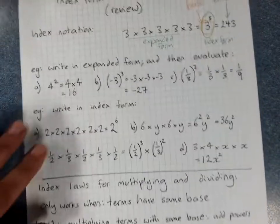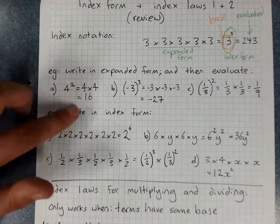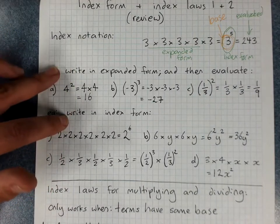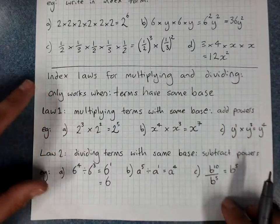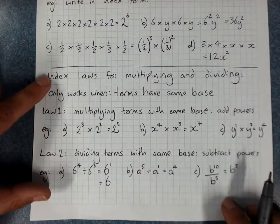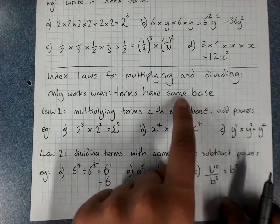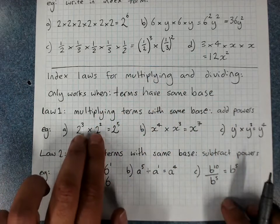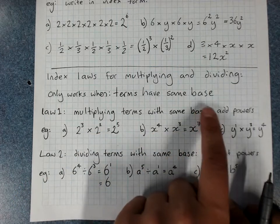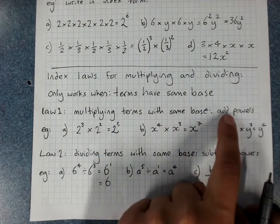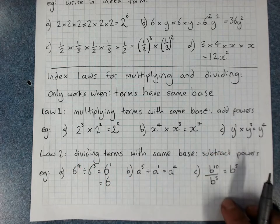To summarise: index notation, how to convert between expanded form and index form, and what the base number is. The index laws for multiplying and dividing work when terms share the same base. Shortcut when multiplying — add the powers. Shortcut when dividing — subtract the powers.